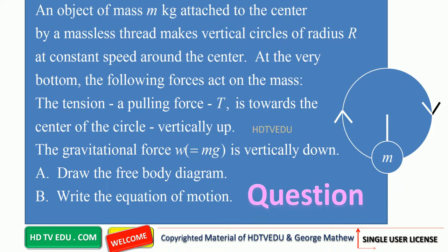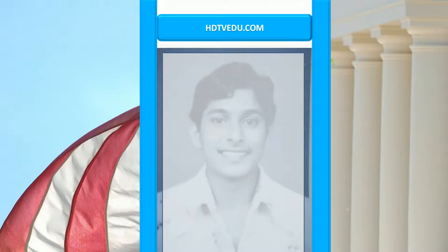An object of mass m kg, attached to the center by a massless thread, makes vertical circles of radius r at constant speed. At the very bottom, the following forces act on the mass: the tension, a pulling force T, is towards the center of the circle vertically up, and the gravitational force W equals mass times acceleration due to gravity, acting vertically down. Draw the free body diagram and write the equation of motion.